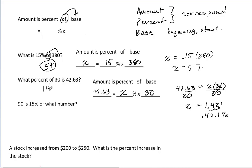So 42.63 is 142.1% of 30. It sounds about right, about half again as big as 30.